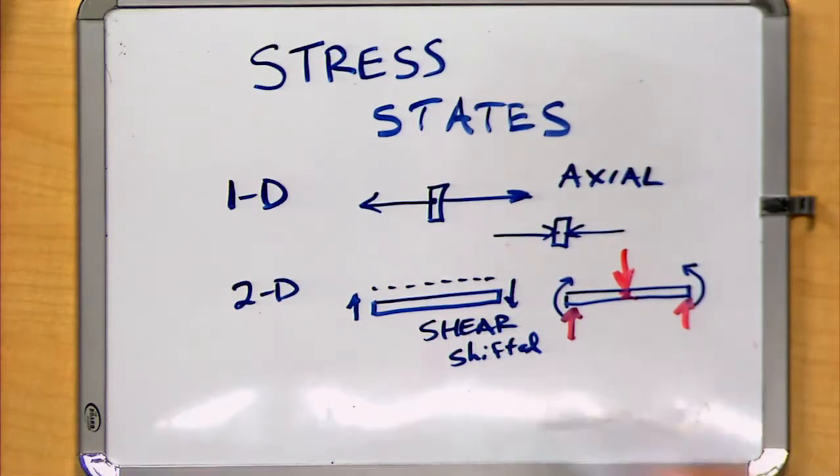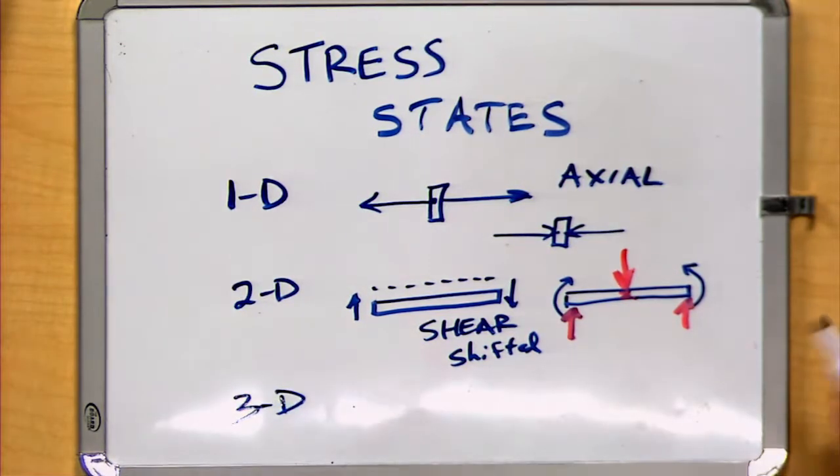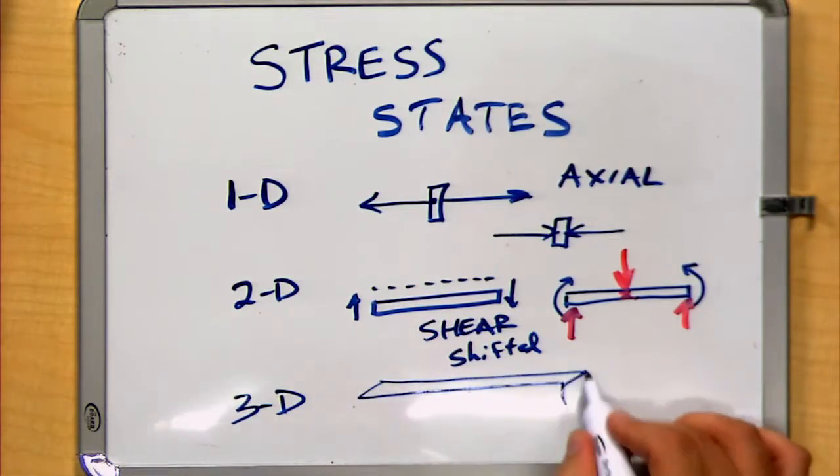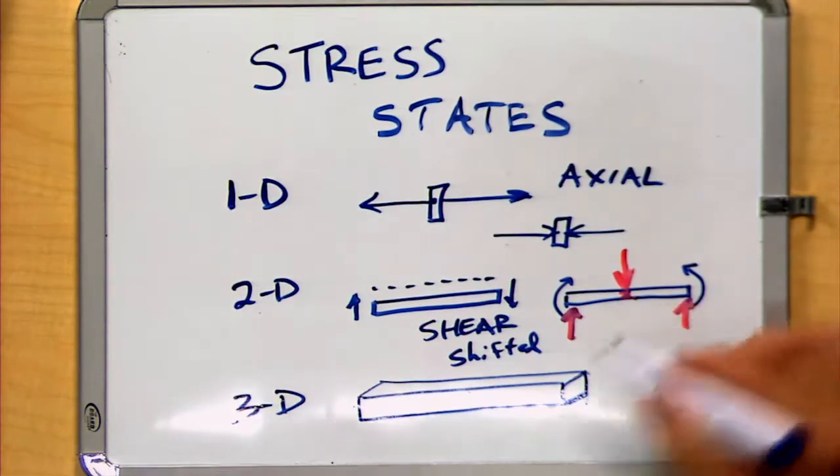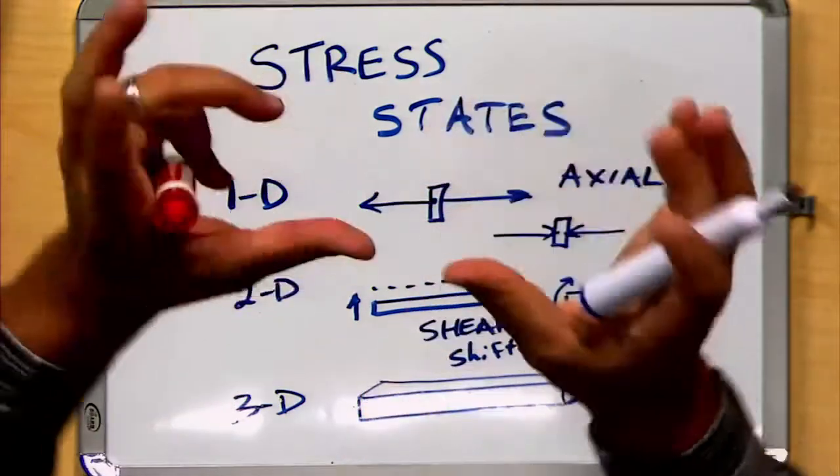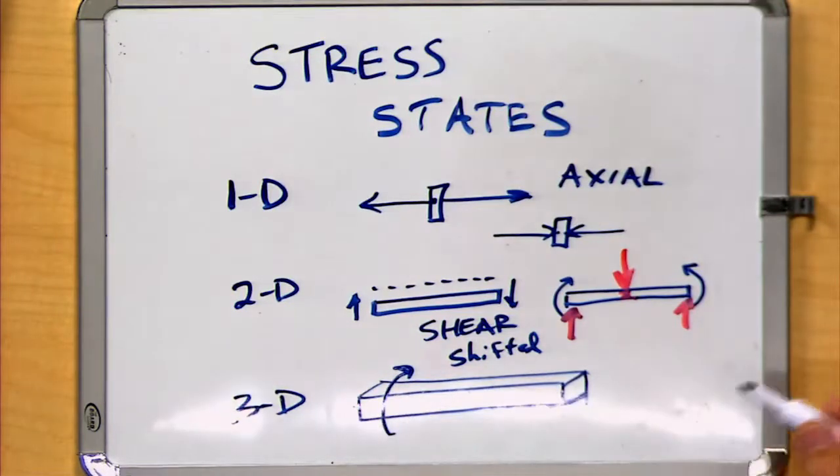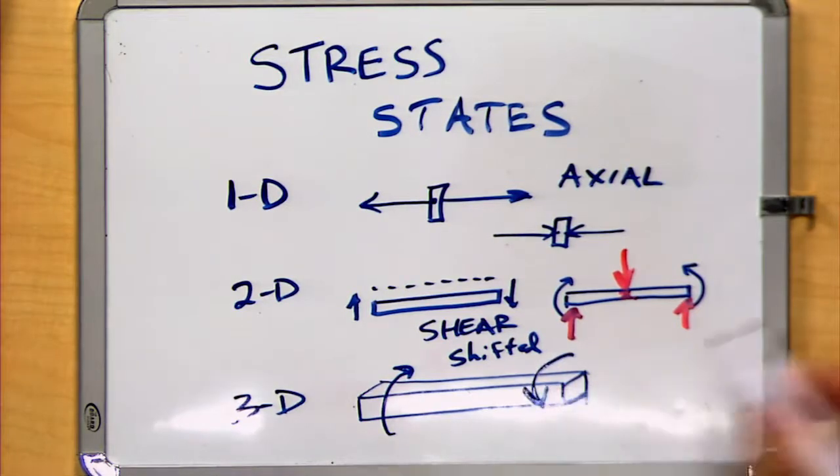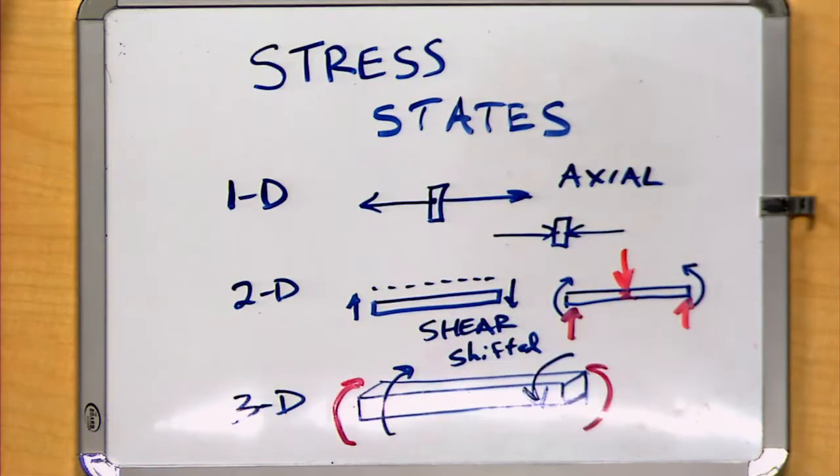We can also think about stress states in three dimensions. States in three dimensions get much more complex. If I take the moments as we had over here, but instead of applying them in the same plane, we shift them so they're applied in a different plane. For example, we introduce one moment around this end of the beam, but a different moment around that end, instead of introducing it in the same plane. This leads to a condition known as torsion.